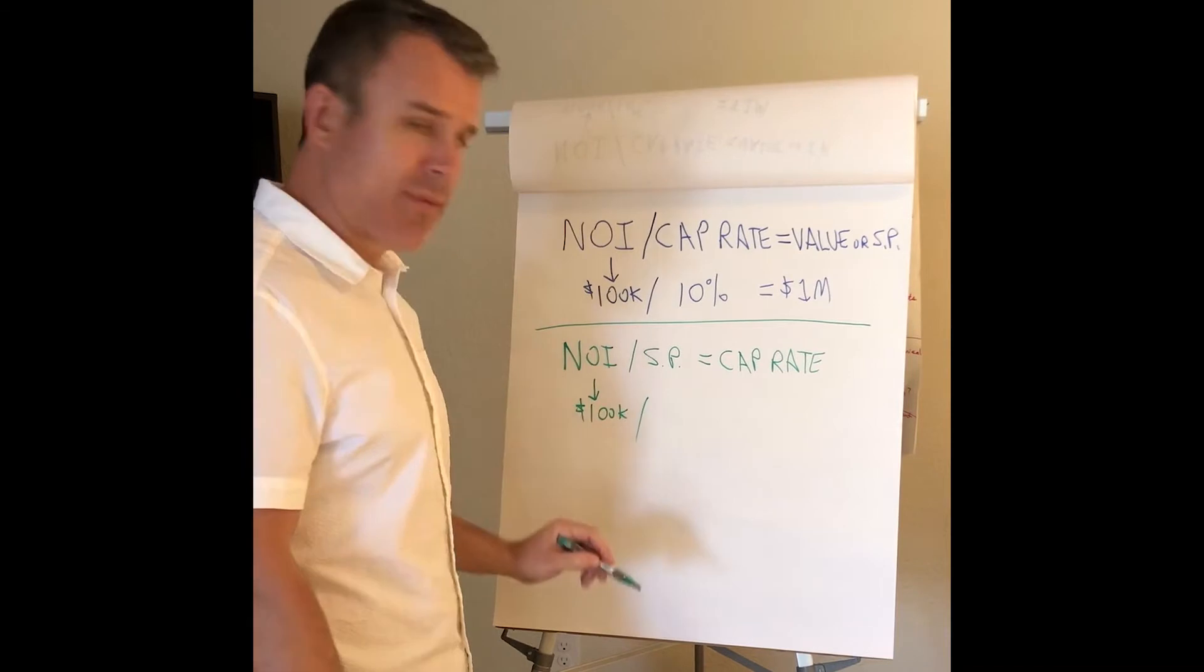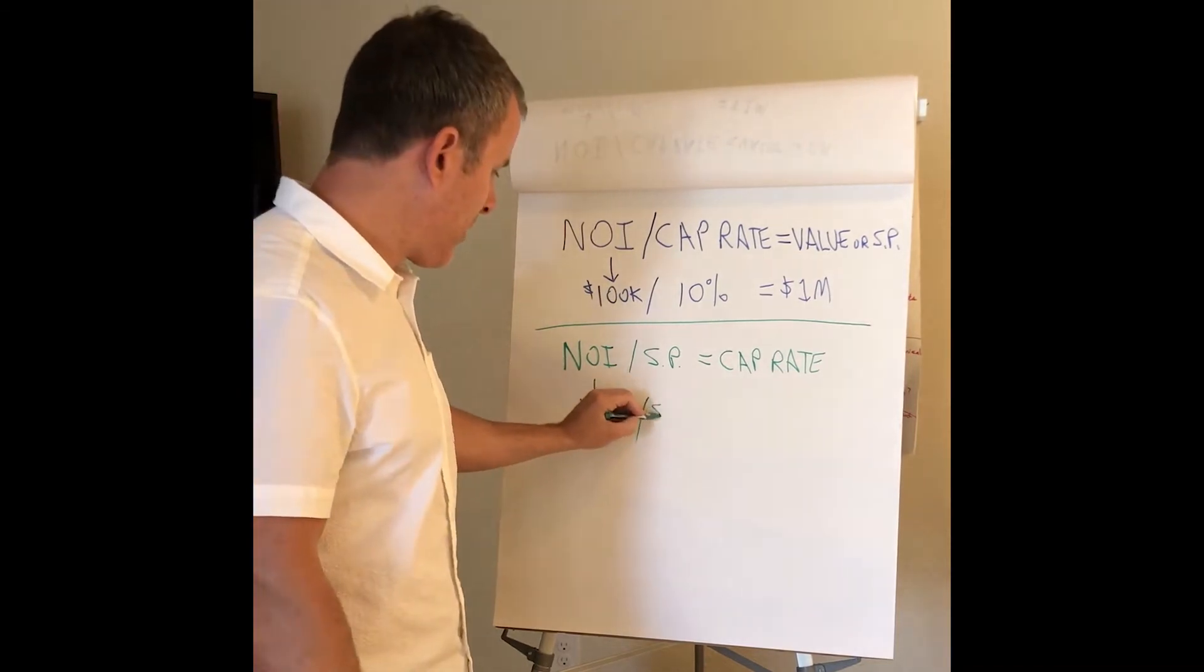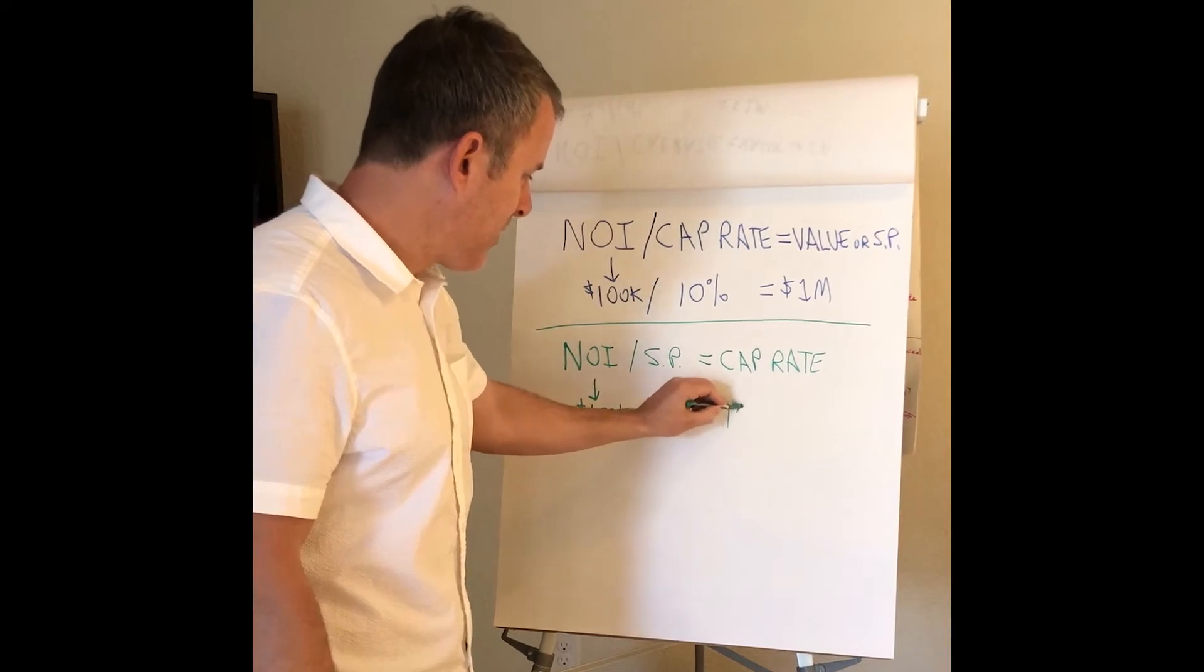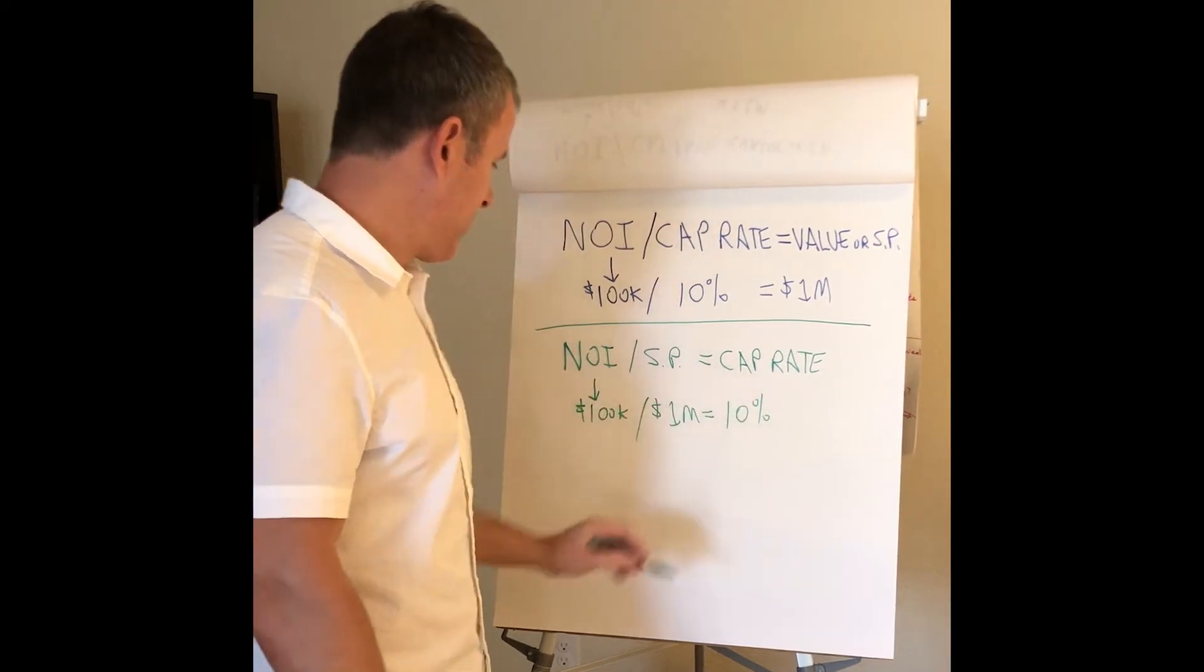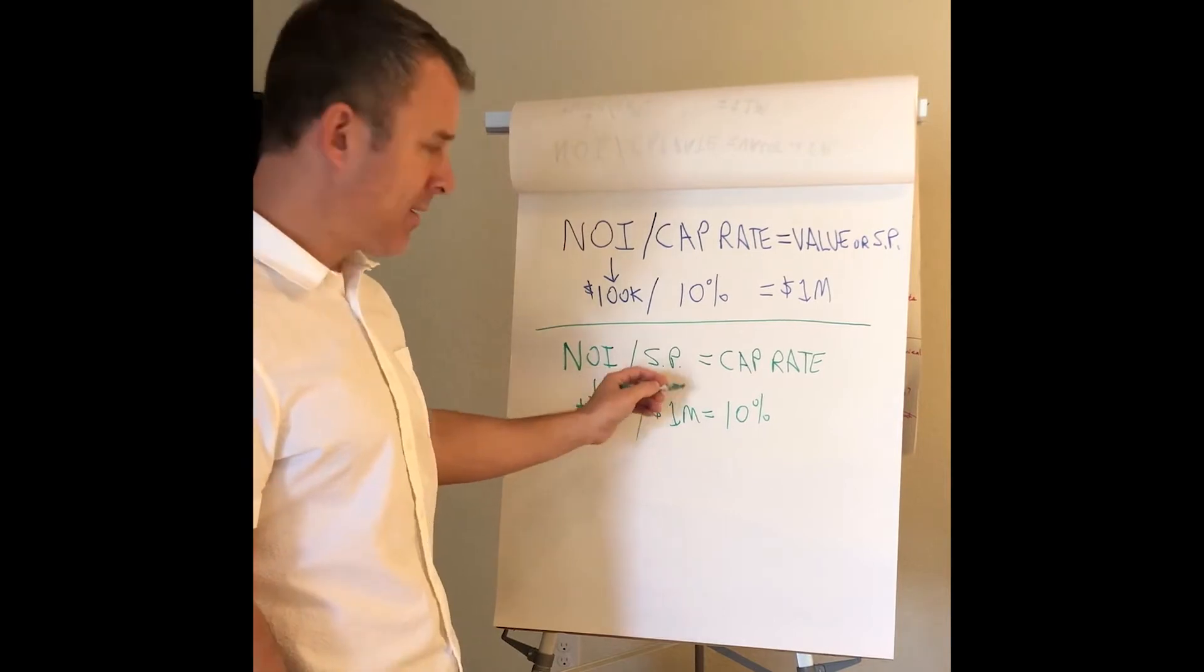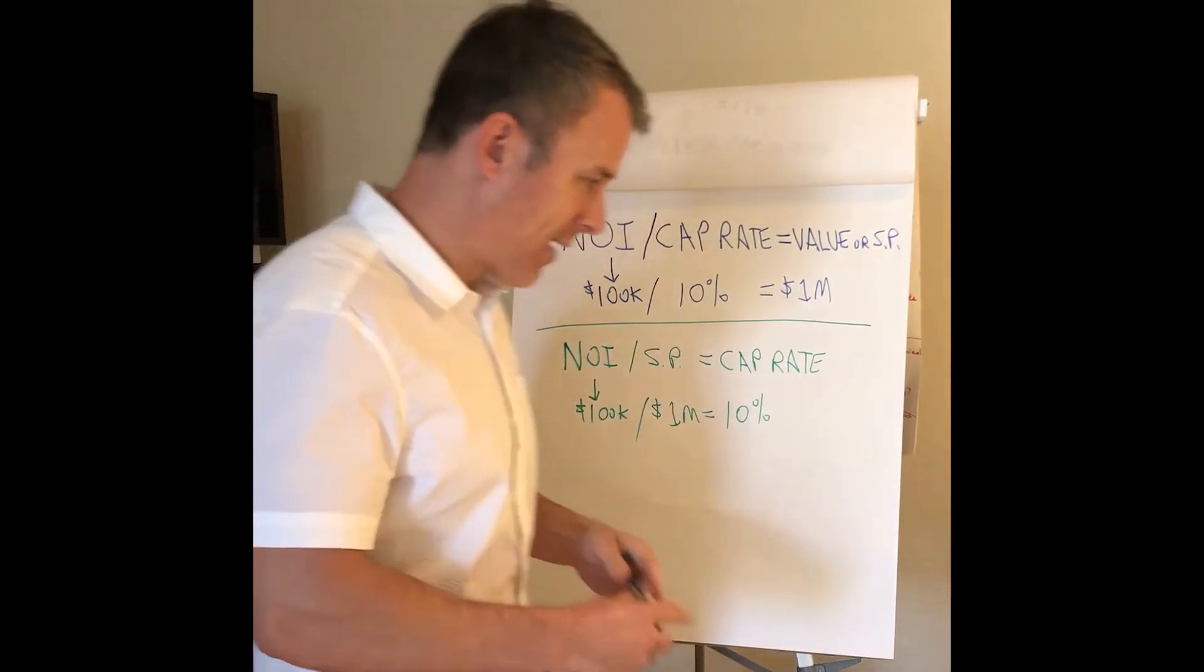$100K NOI, let's say the selling price is $1 million, that equals a 10% cap rate. NOI divided by selling price equals cap rate. $100,000 divided by a million equals 10% cap rate. That's all fine.